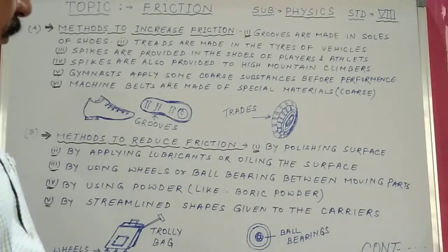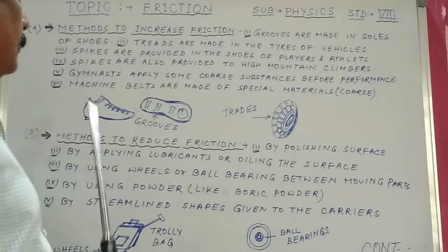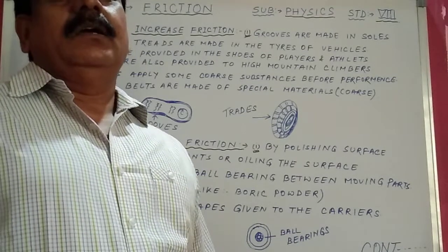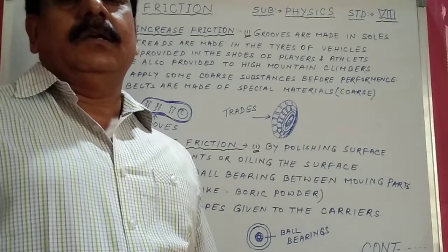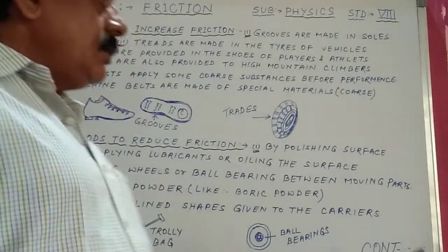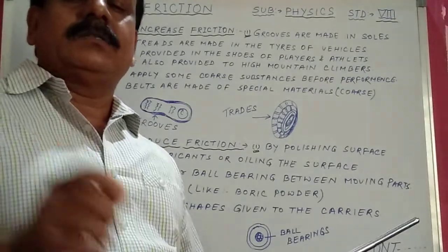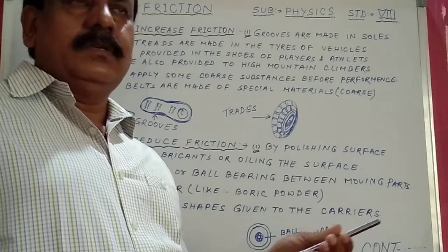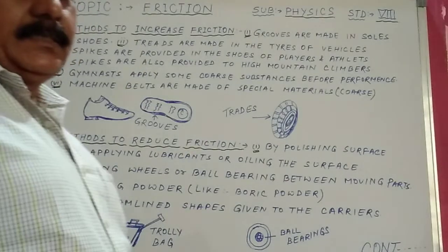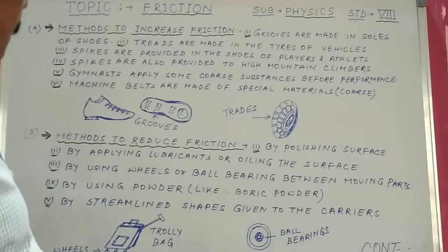You have to go through all these points and note them down in your physics copy. Many of you are asking whether you should note down all these things — yes, you have to note down all of these in your physics notebook, because you will get marks in your periodic test — five marks for each periodic test in copy.